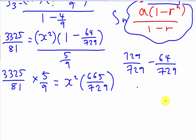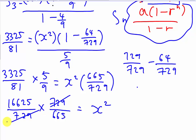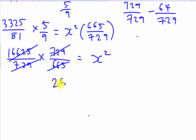So I moved the 5/9 to the other side. It will be: the S3 value multiplied by 5/9 equals x squared. Then this one — 1 minus 64/729 equals 665/729. I flip over: 729 over 665 times 16625 equals x squared. Then 729 and 729 simplify, and 16625 divided by 665 gives 25. So after simplifying, I get 25 equals x squared.